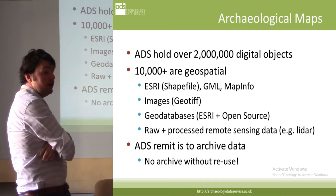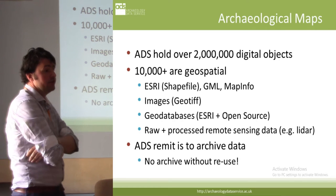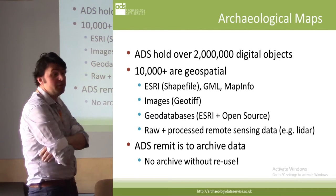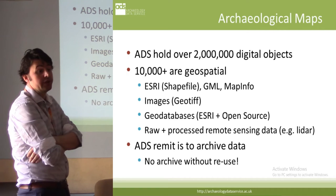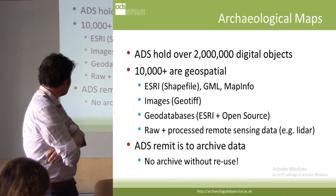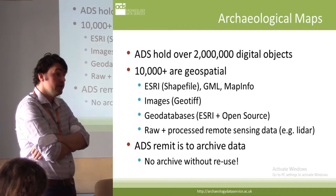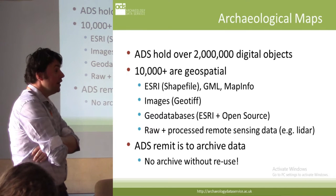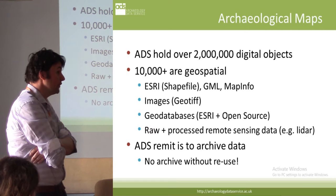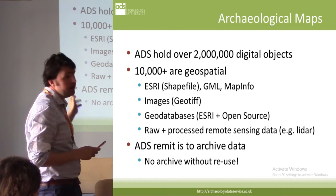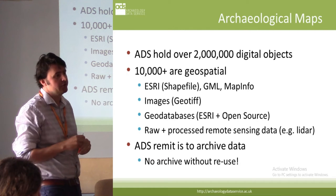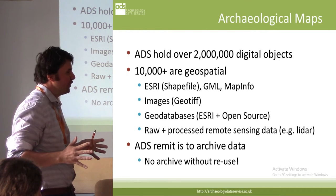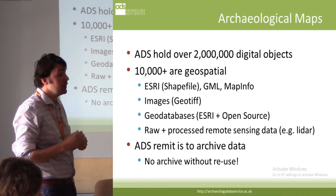The ADS and our digital archive hold over 2 million digital objects, 10,000 of which are geospatial, given to us by both development-led projects and UK researchers. They come in a variety of flavors — mainly Esri formats, but also various open source flavors such as GML. The ADS remit is to first and foremost archive this data and make sure it is secure in perpetuity. Somebody gives us the data, and in 100 years' time we have to be confident that yes, you can have this data back and it will always be accessible. But a big part of our model is that there can actually be no successful archive without reuse — without people actually having access to this data. It's no good just having it on a secure server with no public access. We actually strive for people to engage and use our data.